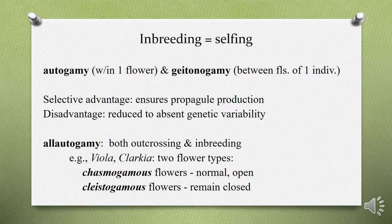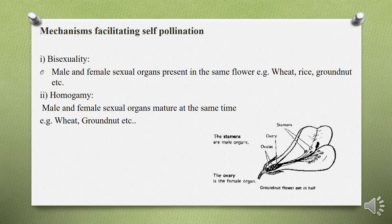There is another terminology known as alloautogamy, defined as the occurrence of both self and cross-pollination at the same time. When discussing flowers with reference to self or cross-pollination, there are two major types: chasmogamous flowers, which are normal open flowers, and cleistogamous flowers, which remain closed.